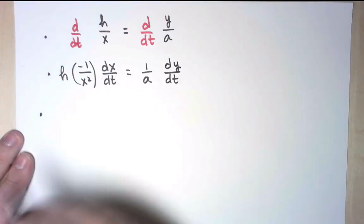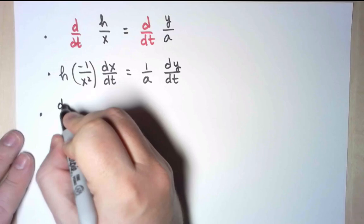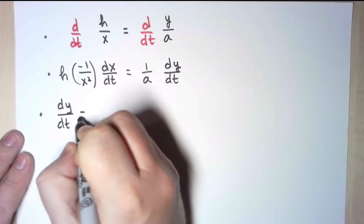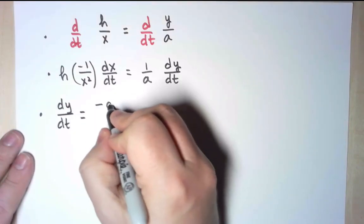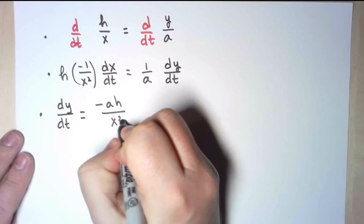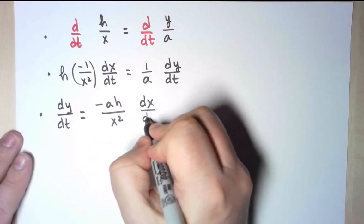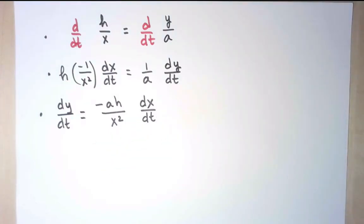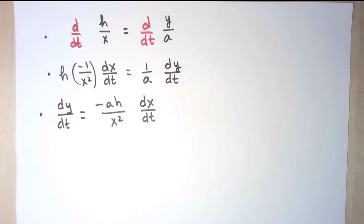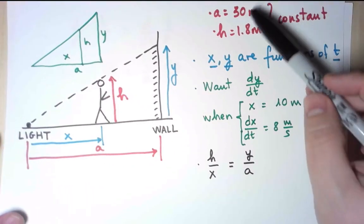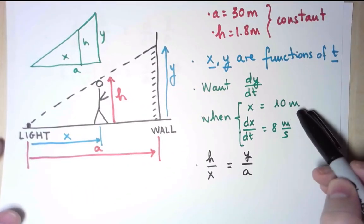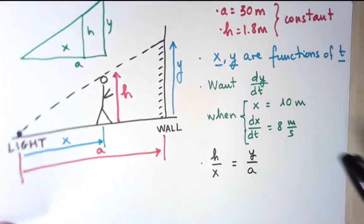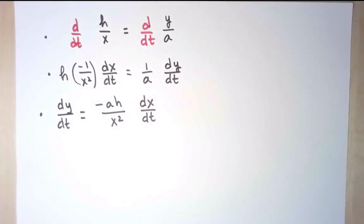And now I can solve for the quantity I was looking for, which is dy over dt. And that comes out to be minus a h over x squared times dx dt. So now let's see if I have all the variables to substitute in here. I know the values of a and h, they are constant, and at the instant I care about, I know the value of the function x and its derivative.